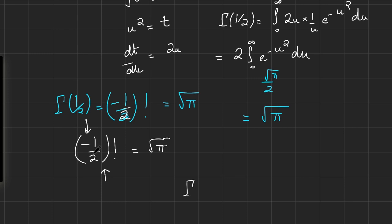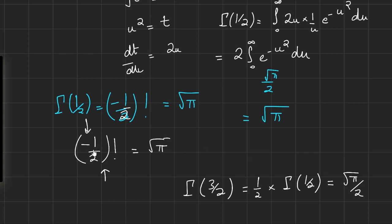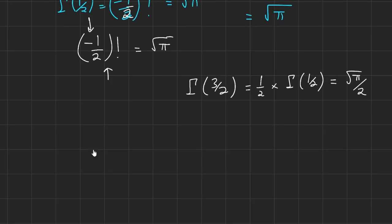Another important value is gamma of 3/2. We can save time using what we know: by the functional equation, gamma of 3/2 equals 1/2 times gamma of 1/2. Since gamma of 1/2 is square root of pi, that's square root of pi over 2. So 1/2 factorial equals square root of pi over 2.